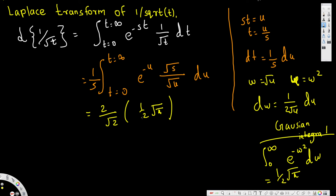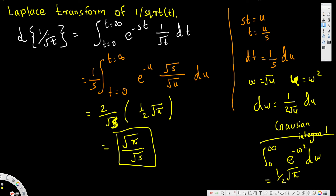The 2's cancel, and we get square root of π over square root of s. That is the final answer: the Laplace transform of 1 over square root of t equals square root of π over square root of s. I hope you guys find this video helpful. Thanks for watching, don't forget to subscribe — see you next time.